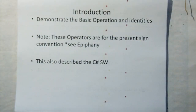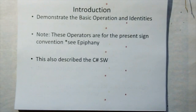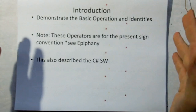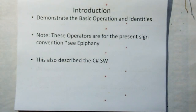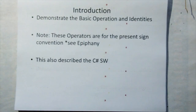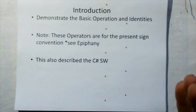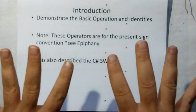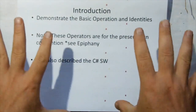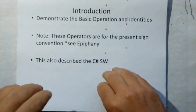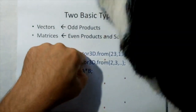We're going to demonstrate the basic operations and identities. Note that these operators and identities shown in this video are dependent upon the selection of the sign convention, as shown in the previous epiphany video. If we decide there's a better rule set out there, that's going to change only the signs, and will either replace or update some of the identities shown here. This video will also describe the C-Sharp software which will be released next weekend.